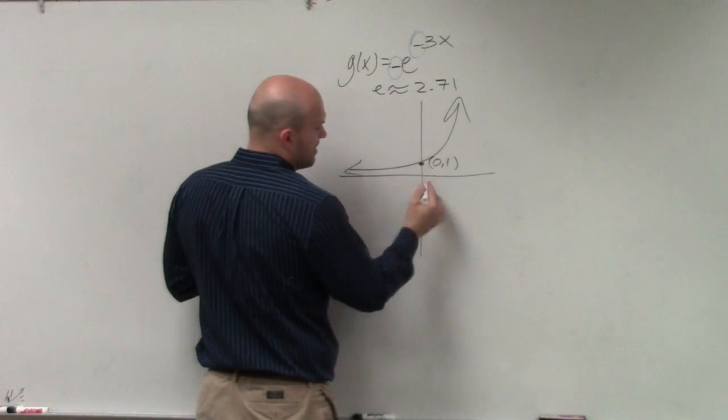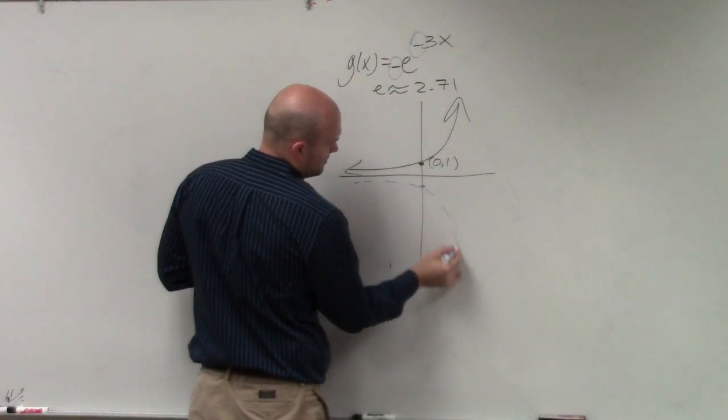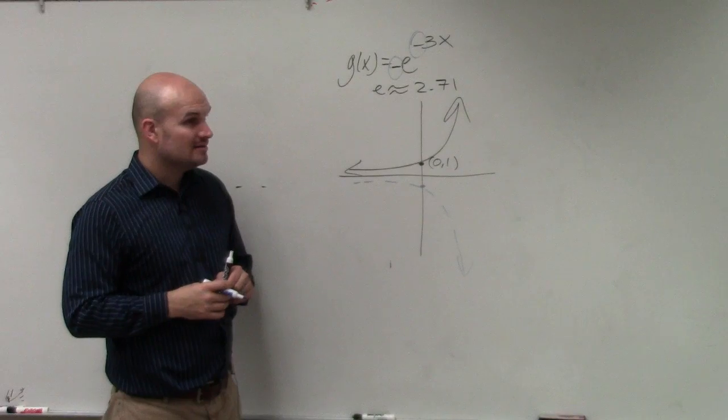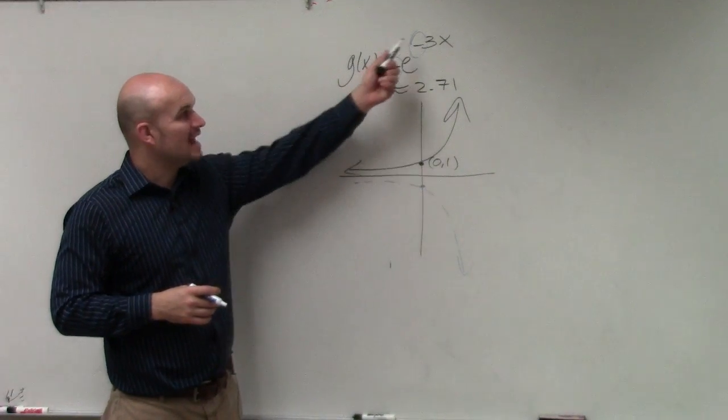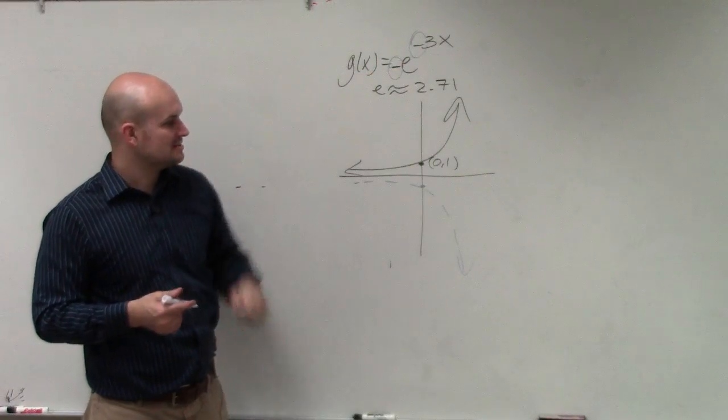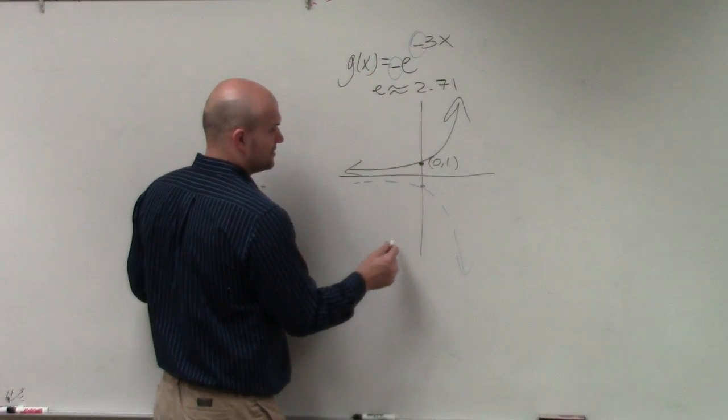So now, my point is going to be down here, right? And then, not only that, but now this negative reflects it about the y-axis. So now, this graph is going to look something like this.